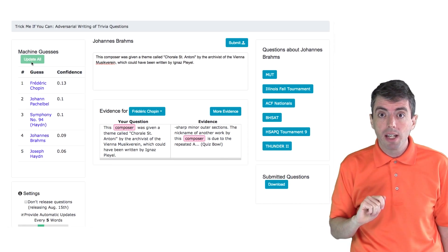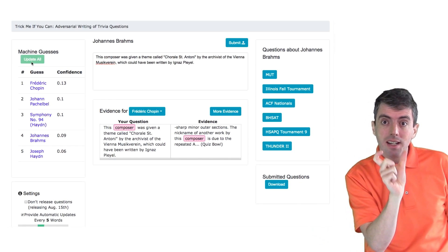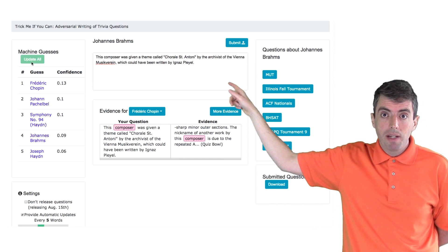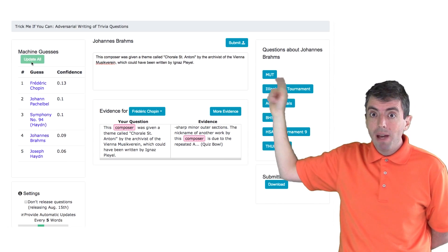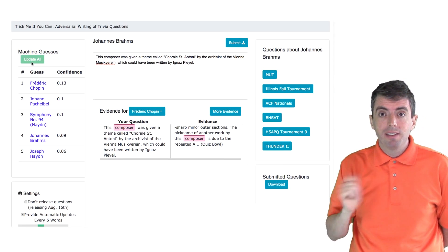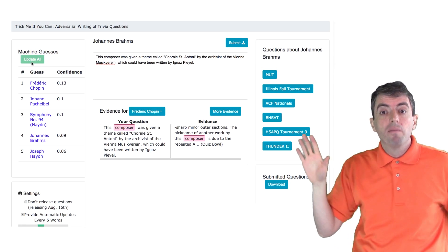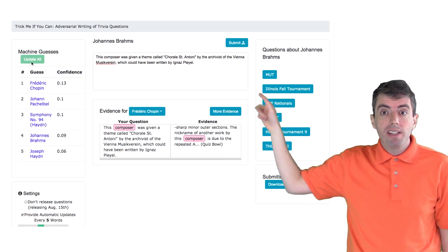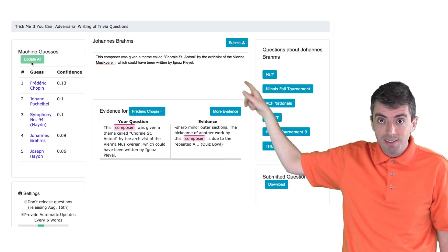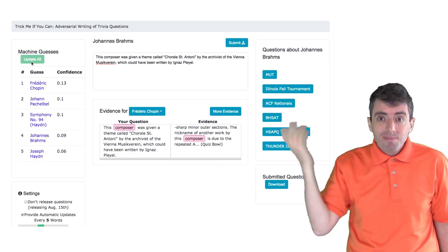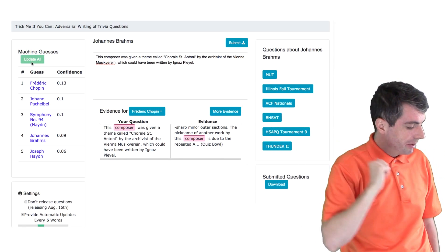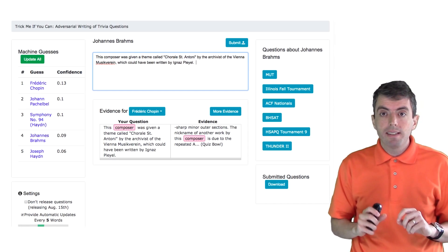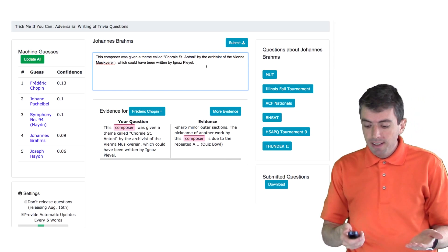So not only does the system need to know that Brahms wrote something based on the chorale St. Anthony based on his position as archivist of the Vienna Musikverein. And now that I'm walking down this path, I'll change the way that I'm writing the question slightly to focus on some of the academic controversy about how this music was inspired. And maybe the chorale St. Anthony was actually written by Ignaz Pleyel. So let's extend this out a little bit more, and we'll add in the next sentence.